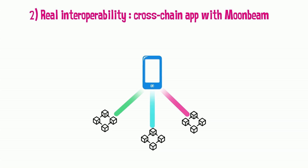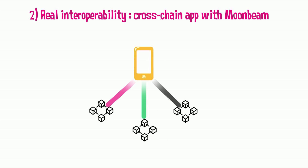Therefore, users access one application built on Moonbeam but can work with any of their assets from any blockchain using the cross-chain connection. For example, instead of bridging tokens from one chain to another to use DeFi applications, the smart contract could lock tokens on one chain and allow their use on the other chain from where they are — no bridging or moving the tokens.